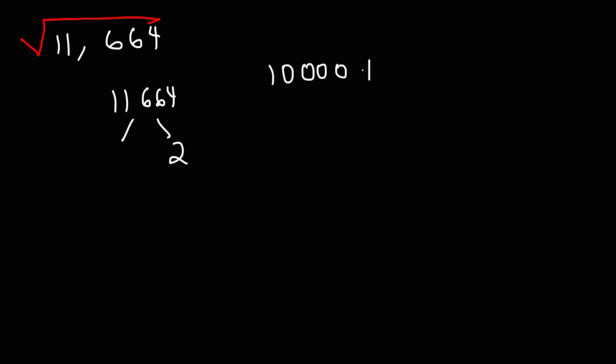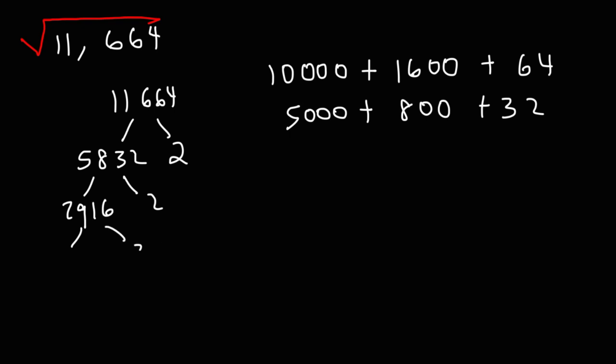What I'm going to do is break it down into small numbers. This is 10,000 plus 1,600 plus 64. Half of 10,000 is 5,000. Half of 1,600 is 800. Half of 64 is 32. So this is going to be 5,832. Now, half of 58 is 29. Half of 32 is 16. Now let's divide it by 2 again.